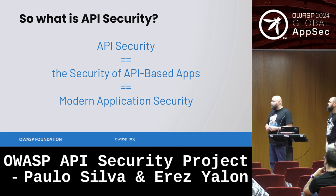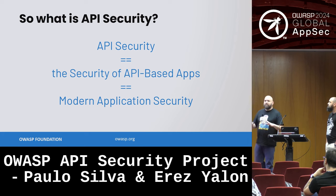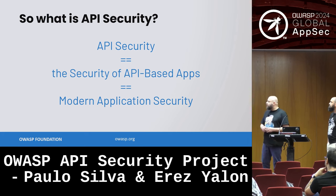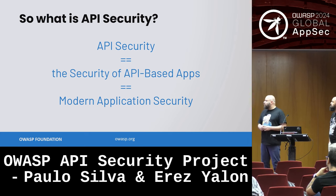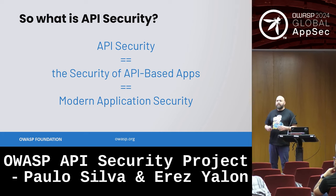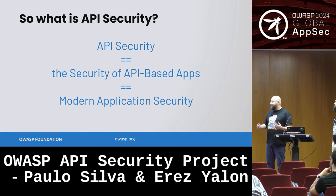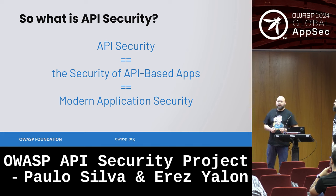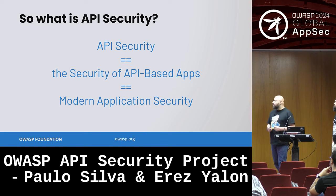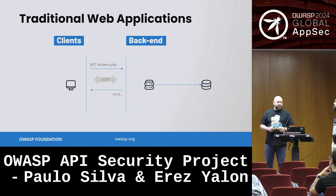When we talk about API security, we need to make sure we're speaking the same language. When we say API security, we mean the security of API-based applications — and basically, we really mean the security of modern applications. It's relevant to each and every modern application.